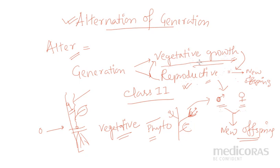This is known as Alternation of Generation, because it is altered — it is changed. One follows the other and the other follows the same. This is altered. And the generation will come. So this is known as Alternation of Generation. This is a process through the organism — mainly we call plants. What do plants do? Vegetative growth, then reproductive growth, then reproductive growth, then vegetative growth.